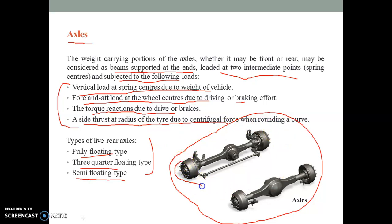Generally, what are the axles? Axles act as axis for the wheels to spin around. The beam type axle bears the load of the vehicle. Generally, what type of load is acted on the axles are mentioned here. Initially, the weight carrying portion of the axle, whether it may be front or rear, may be considered as beam supported at the ends, loaded at two intermediate points, spring centers, and subjected to the following loads.